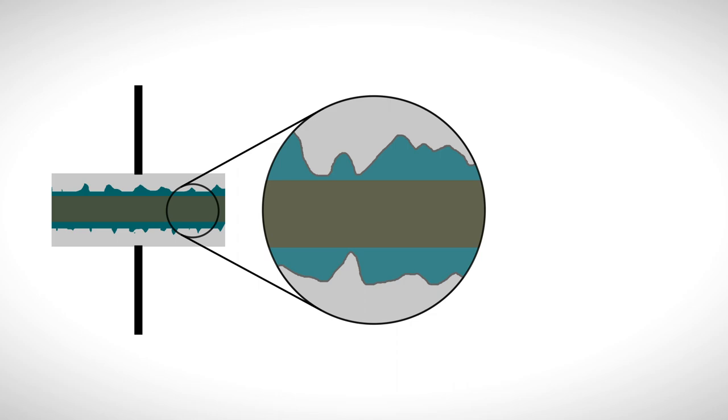But with the help of a process called anodic oxidation, we are able to let the oxide layer grow. And a thicker layer can withstand a higher voltage.